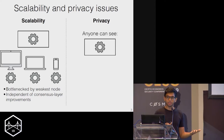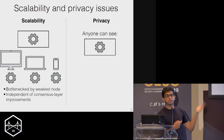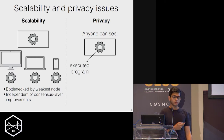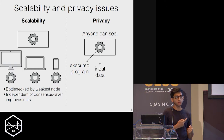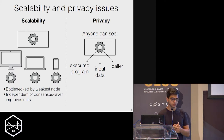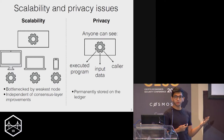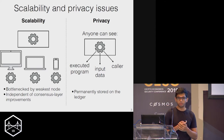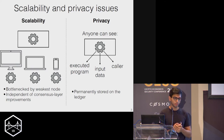You also have privacy issues. Because you're sending your transaction out for people to see and execute, nodes in the network can see which program is being executed, what data is passed as input, and who is the caller. Making this even worse, all this information is available on the ledger for eternity. As techniques for de-anonymization get better, this information becomes more and more valuable and harms privacy even more.